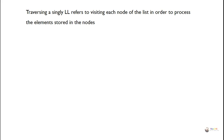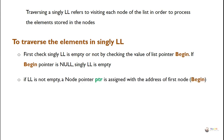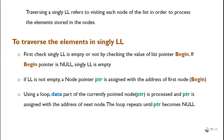To traverse elements in a single linked list, first check whether the list is empty by checking the value of the begin pointer. If begin is null, the list is empty. If not empty, a node pointer ptr is assigned the address of the first node using begin. Inside a loop, the data of the currently pointed node is processed, and ptr is assigned the address of the next node. The loop repeats until ptr becomes null.